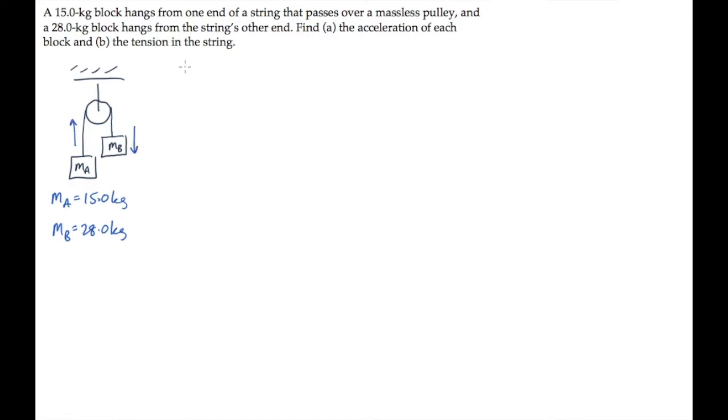We're asked in part A to find the acceleration of each of the masses. Let's do this by drawing two free-body diagrams, one for each mass. Block A has two forces acting on it: its weight goes straight down, and the tension T is directed straight up along the string. The free-body diagram for mass B looks very similar. Its weight is directed down, and its tension is directed up along the string.